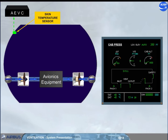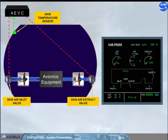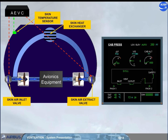As soon as the skin temperature is low enough, on ground or in flight, the skin air inlet and extract valves are closed, and air is directed to the skin heat exchanger for cooling. This is the closed circuit configuration.